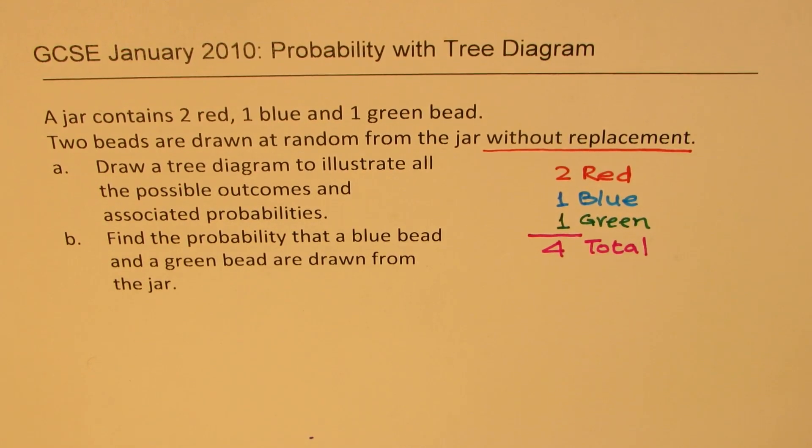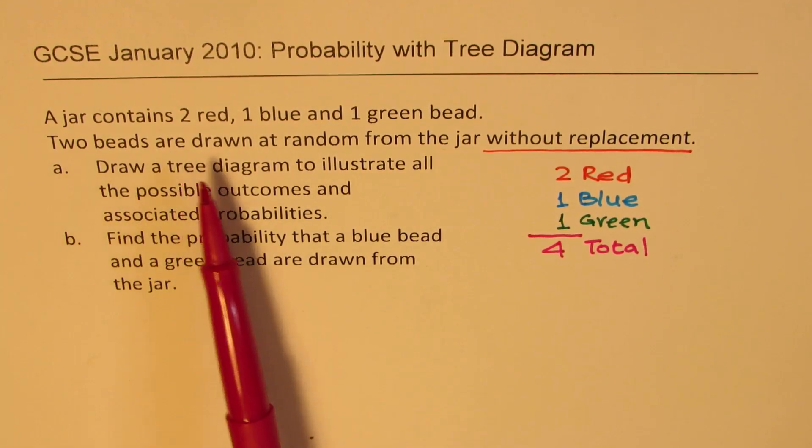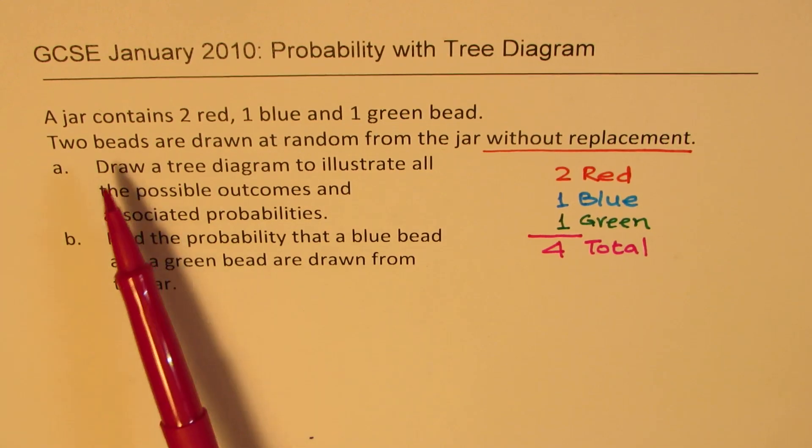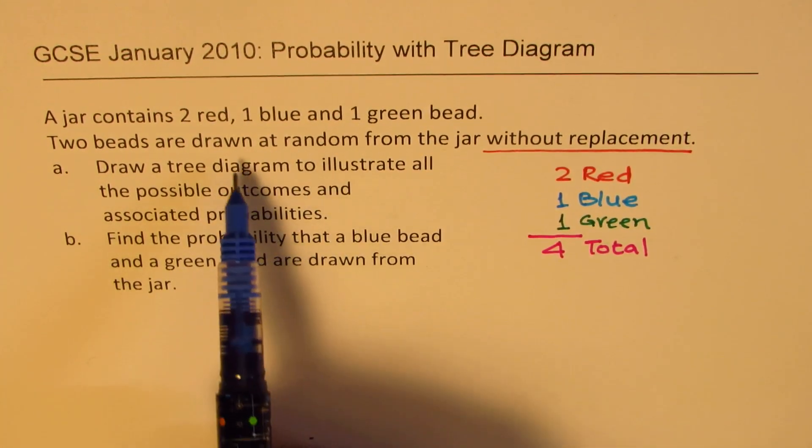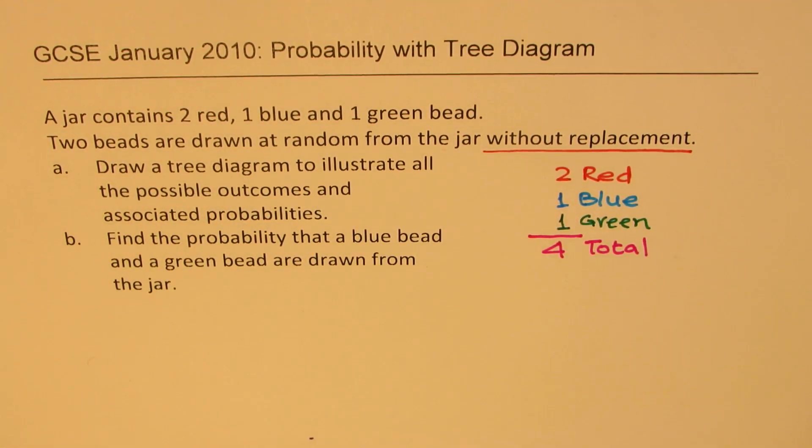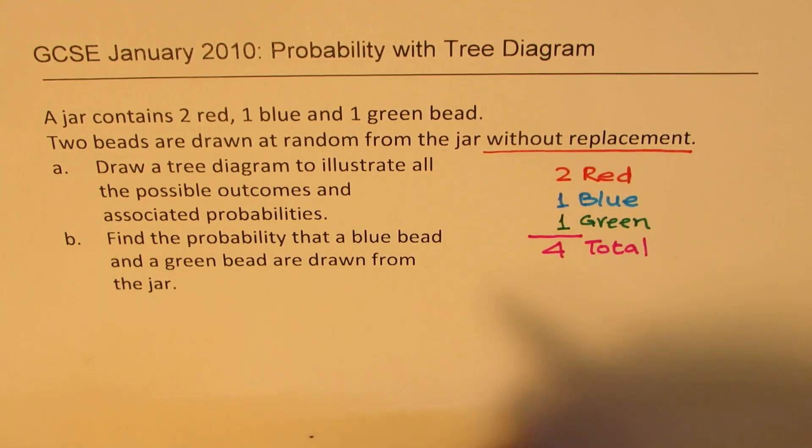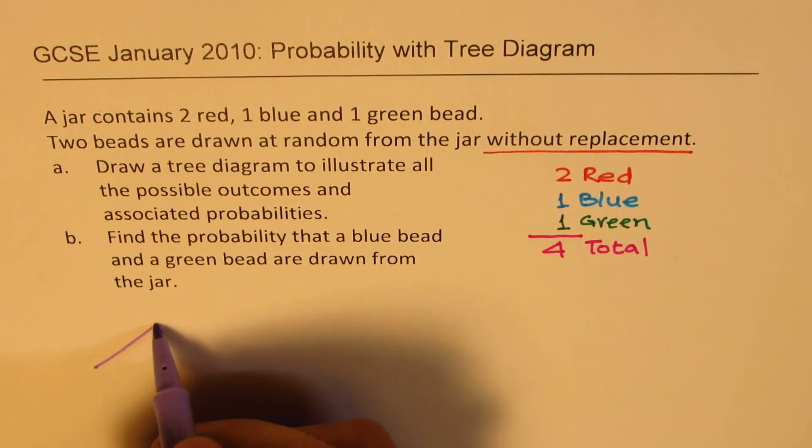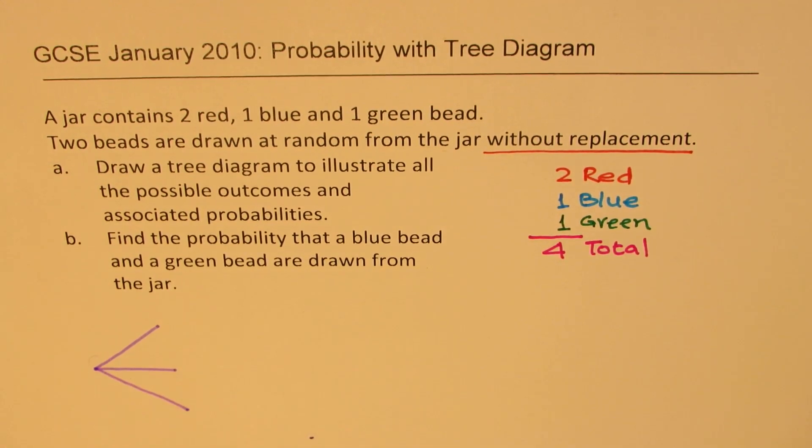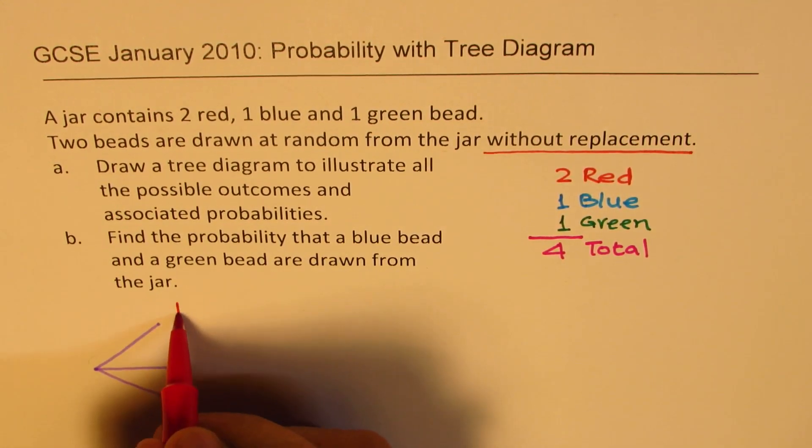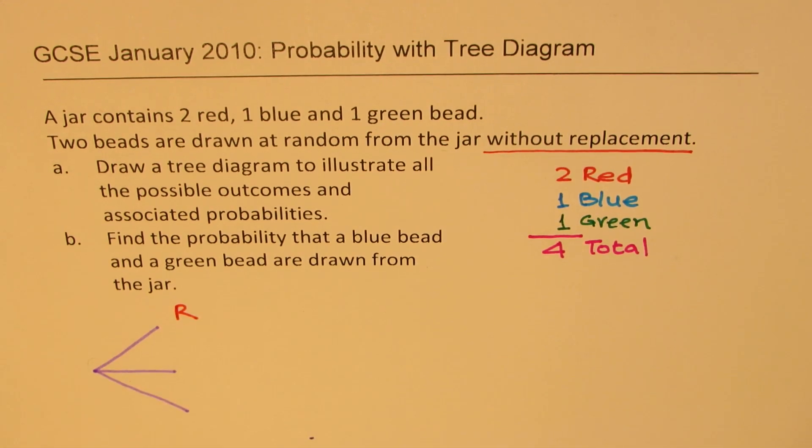Two beads are drawn at random, so we'll assume one after the other. This involves two steps. In step number one, you could draw either color. So in step one, let's begin from here. You have three combinations: you could get a red, you could get a blue, or a green.